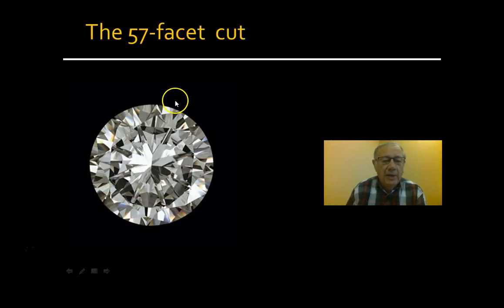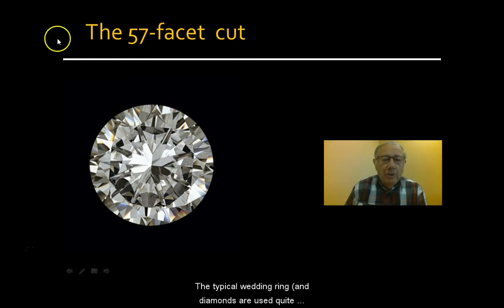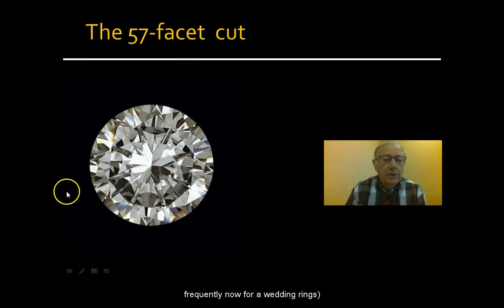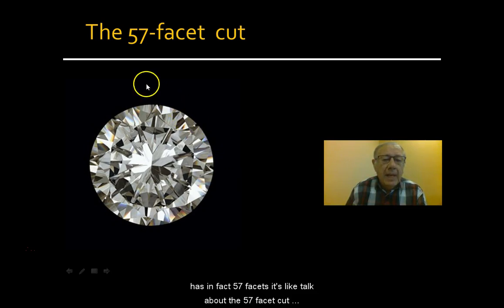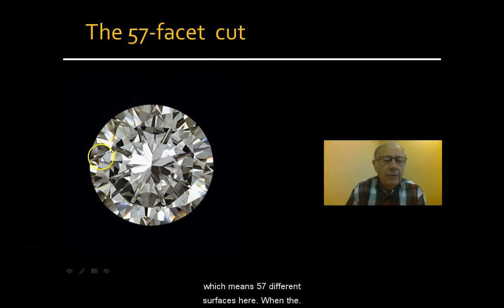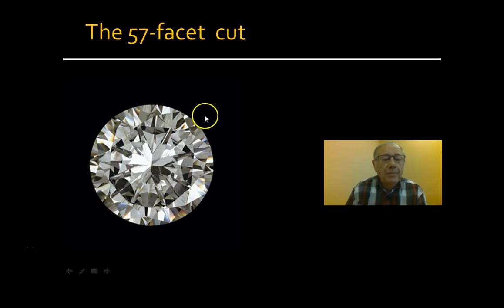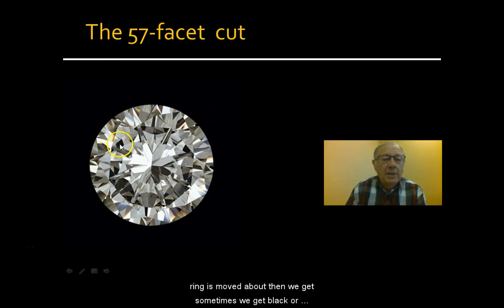The typical wedding ring — and diamonds are used quite frequently for wedding rings — has in fact 57 facets. They talk about the 57-facet cut, which means 57 different surfaces. When the ring is moved about, sometimes we get no color or black.